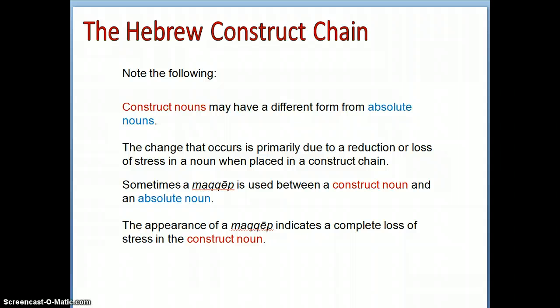Construct nouns may have a different form from absolute nouns. The change that occurs is primarily due to a reduction or loss of stress in a noun when placed in a construct chain. Sometimes a maqqef is used between a construct noun and an absolute noun. The appearance of a maqqef indicates a complete loss of stress in the construct noun, causing vowels to change in the construct nouns.